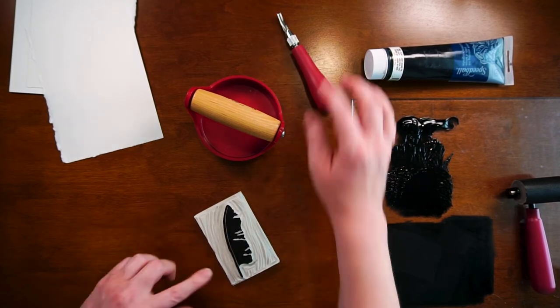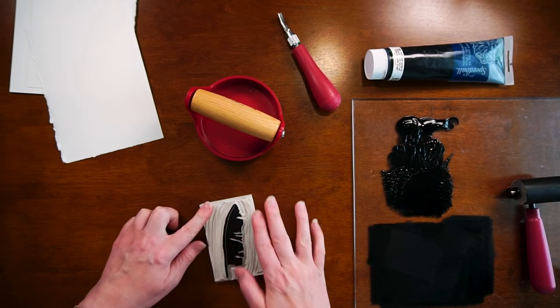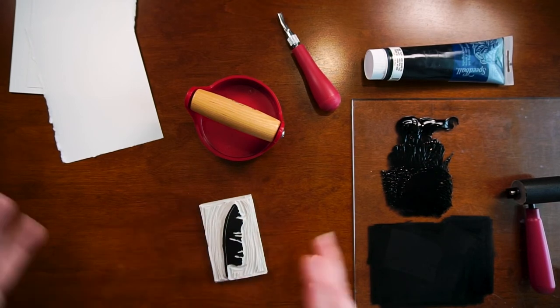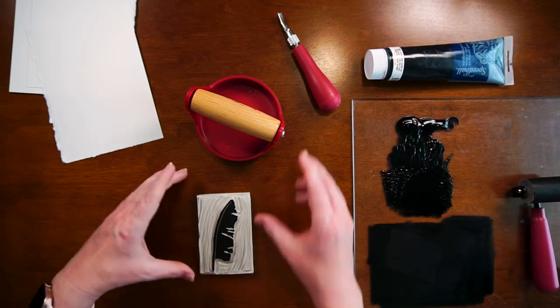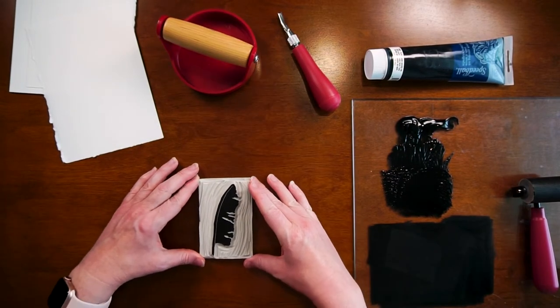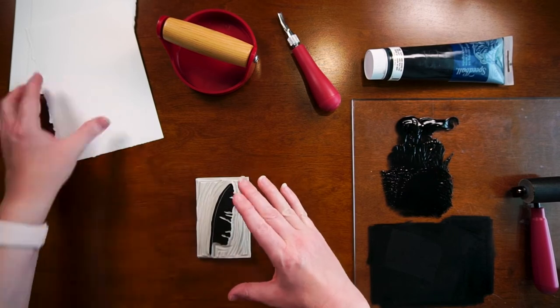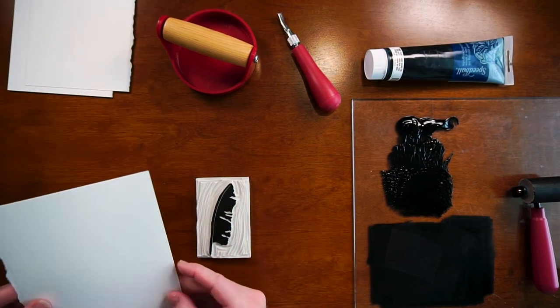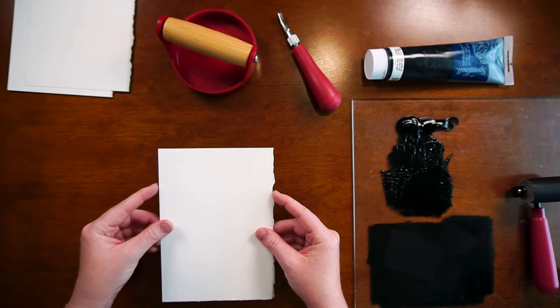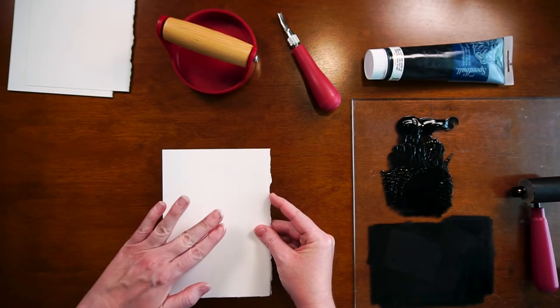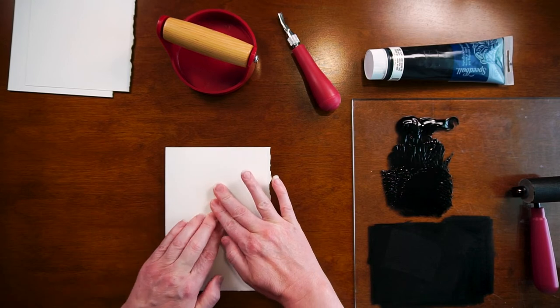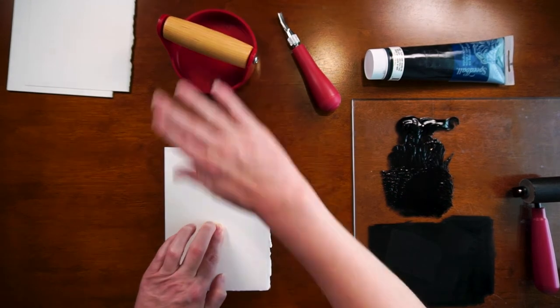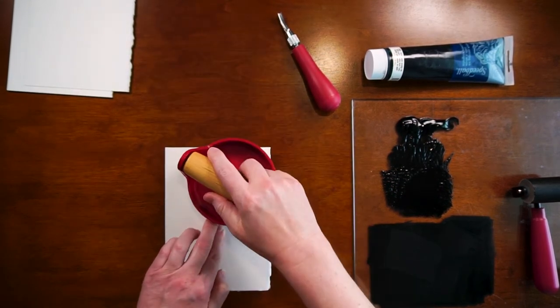Be careful because now you have ink on all on your block itself so you don't want to get that on yourself. Okay, so now kind of center this where you want it and you take your printmaking paper, you flip it down. Now when you set it down you want to set it down and then make sure it's not going to move.